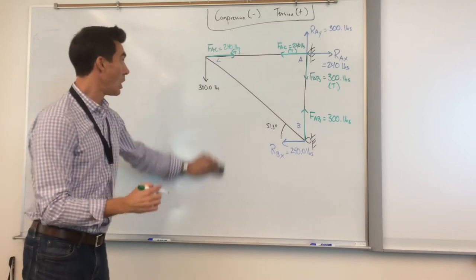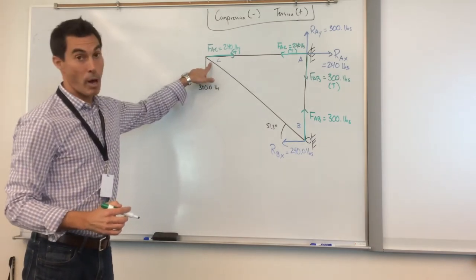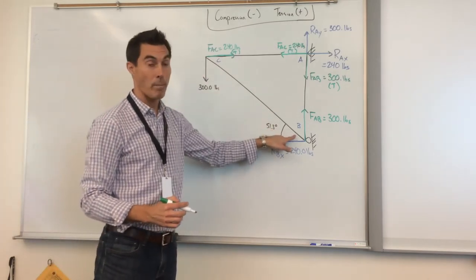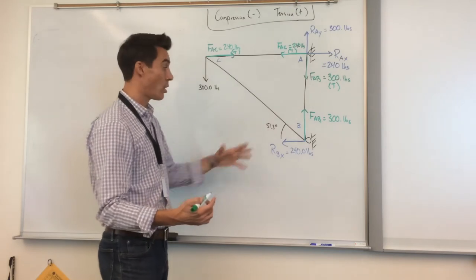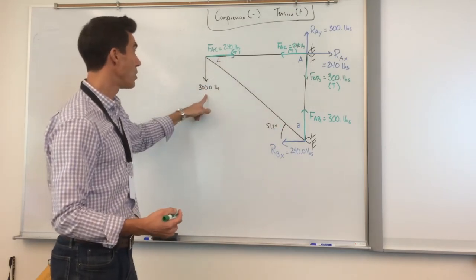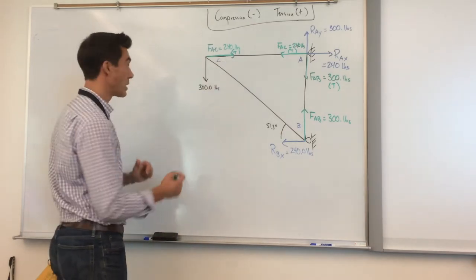Now, moving along, we have to find either the member at point C or the member at point B. The good news is it's gonna be the same, Newton's Third Law. I can use either of the two. And if you look at it, you have 240, 300. So here's how we do the method of joints.